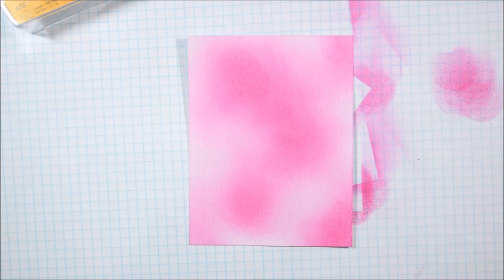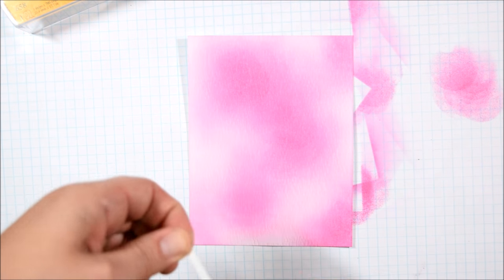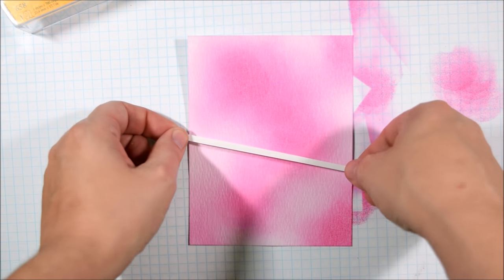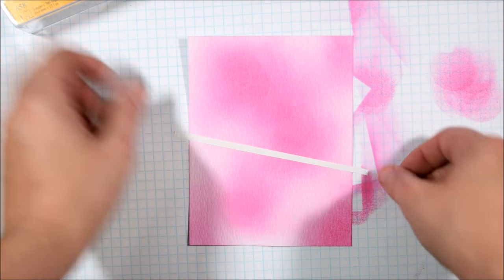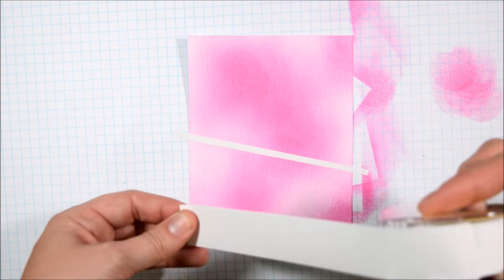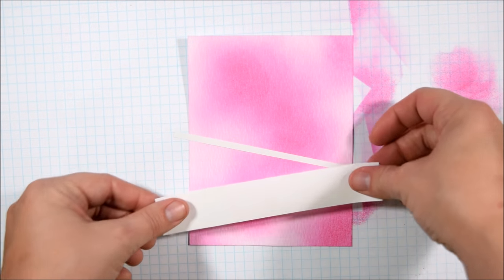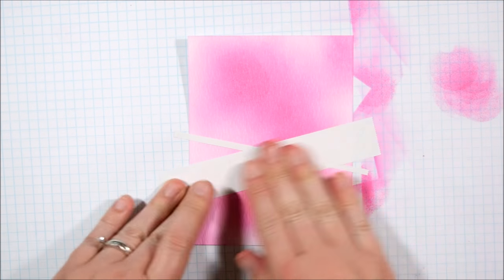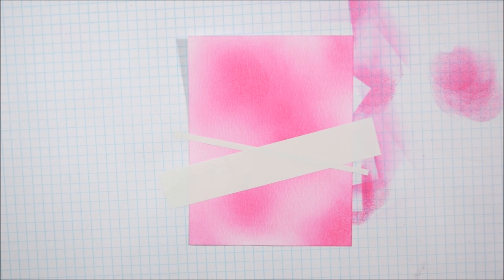Once I get the pink looking the way I like, I'm going to tape it down to my work surface and do some masking. I'm using post-it label tape to create quick masks and straight lines. I thought it'd be really fun to try making a pattern with the post-it tape.